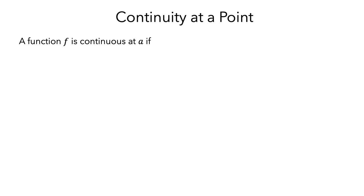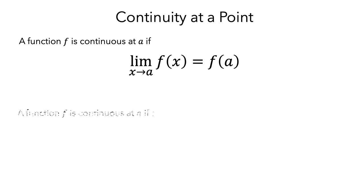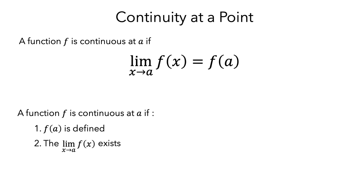Here is what it means for a function f to be continuous at the value a: the limit as x approaches a of f(x) is equal to the function evaluated at a. There are three conditions implicit in this definition. First, f(a) has to be defined. Next, the limit of f(x) as x approaches a has to exist. Finally, the limit must equal the value of f evaluated at a. If any one of these three conditions is not met, then f is not continuous at a, and a would be called a point of discontinuity.